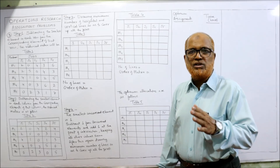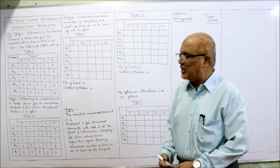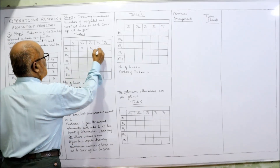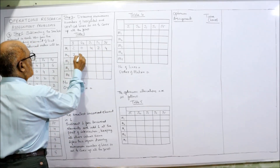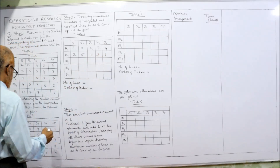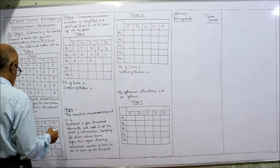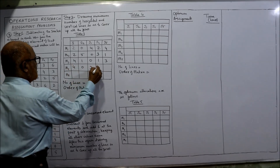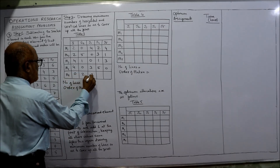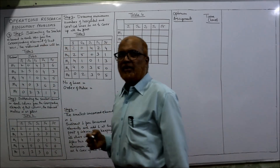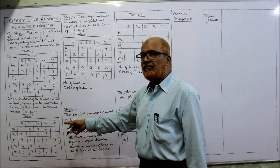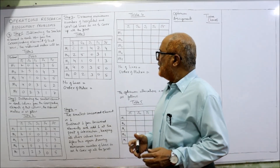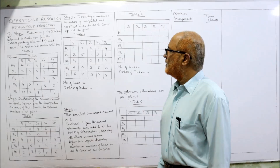Third step: draw the minimum number of horizontal or vertical lines to cover up all the zeros. We copy down the values into table 3: row 1 is 2, 0, 4, 2, 4; row 2 is 2, 5, 0, 3, 1; row 3 is 4, 1, 0, 1, 2; row 4 is 5, 0, 2, 5, 0; row 5 is 1, 2, 4, 1, 0. Now we have to draw the minimum number of lines to cover all the zeros.